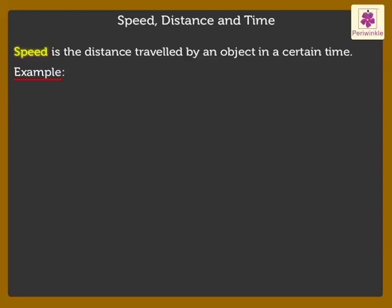For example, a car can move at about 90 kilometers per hour. Here, 90 kilometers per hour expresses the speed of the car.